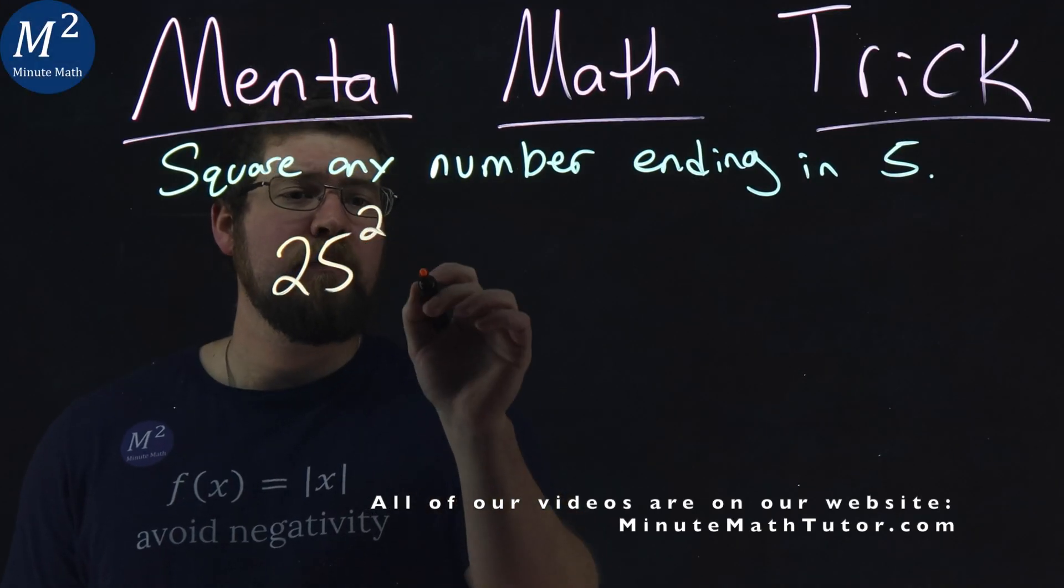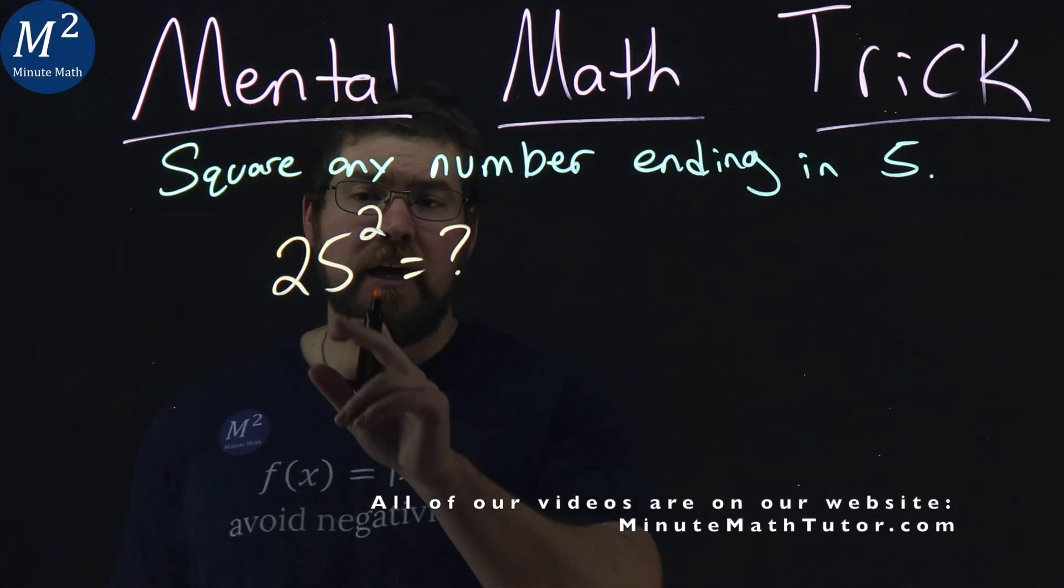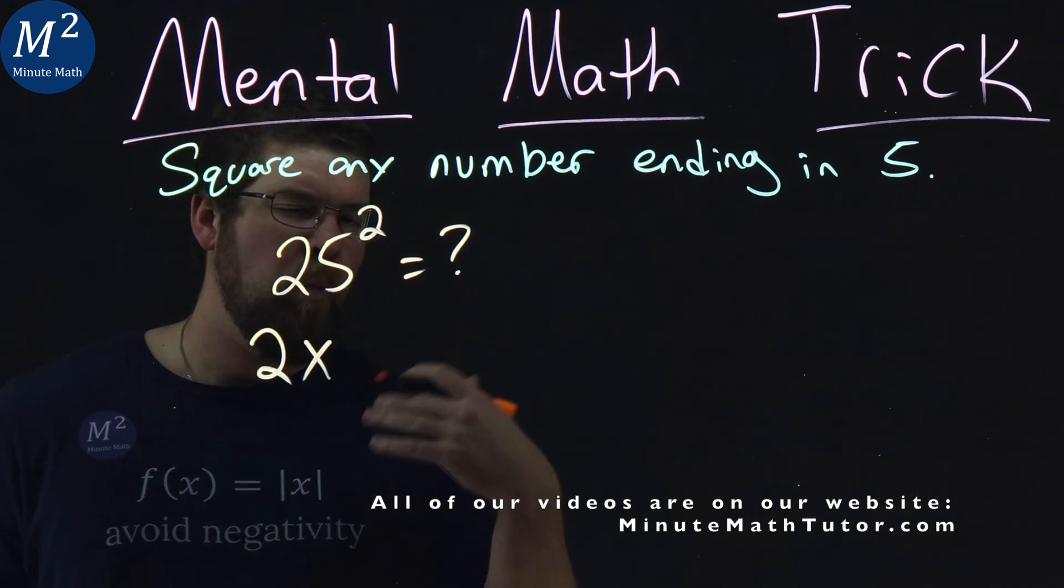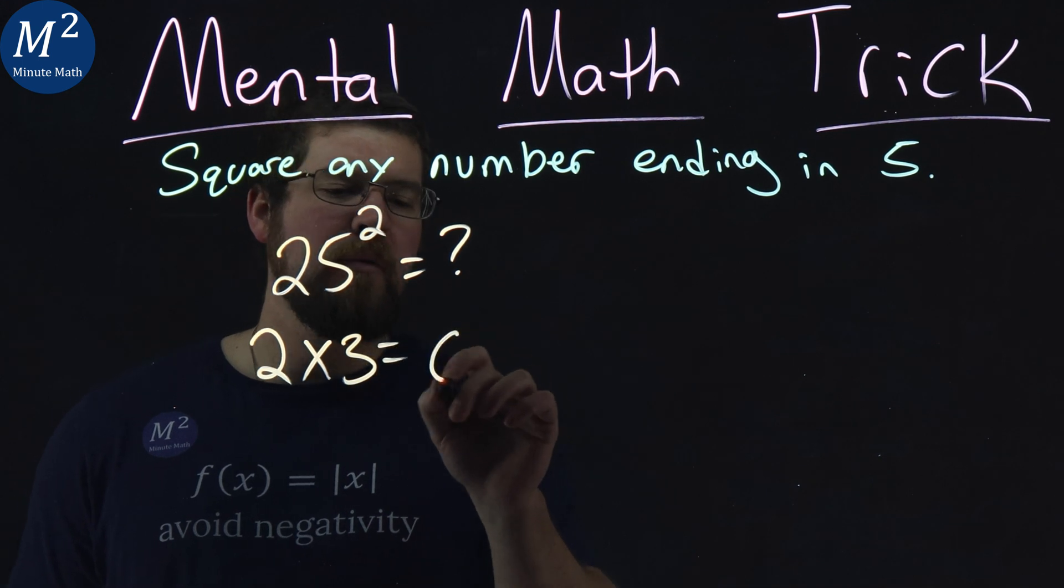A quick recap of that: we would have 25 squared. We could show that by taking the first numbers before the 5, so the 2, multiply that by one more, which is 3, and we would get 6.